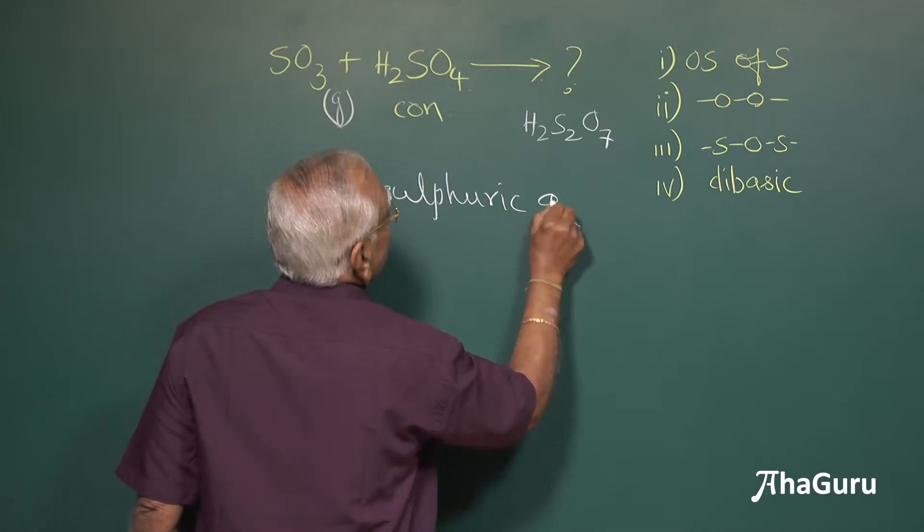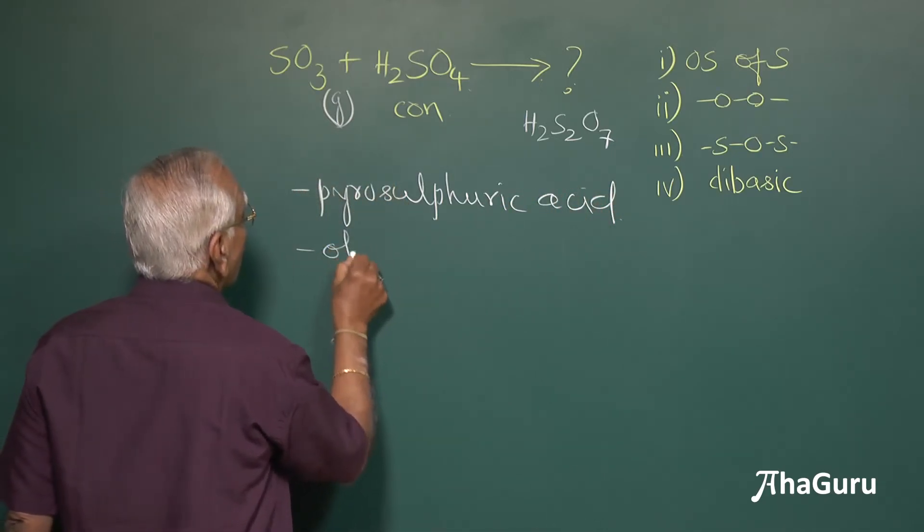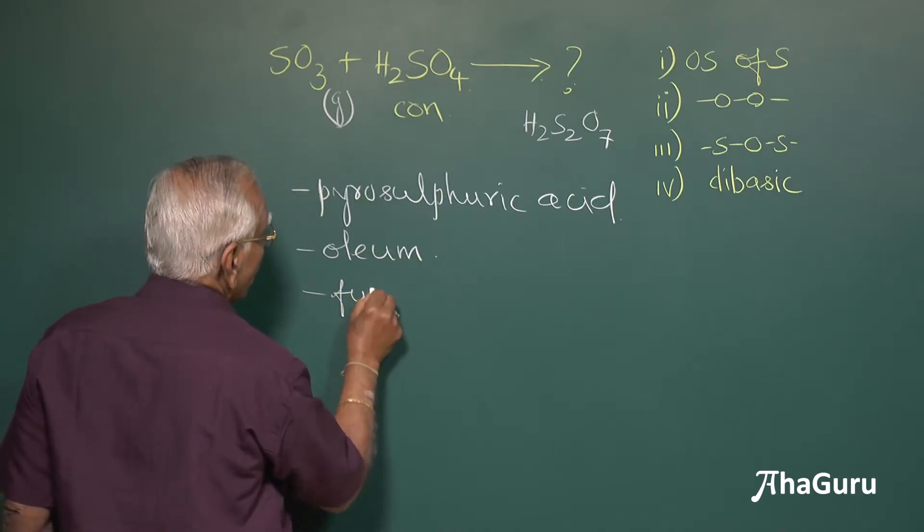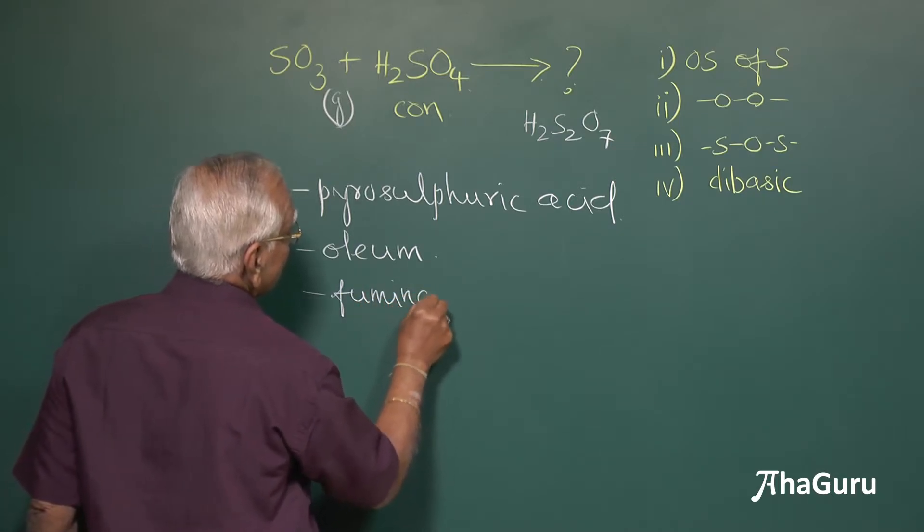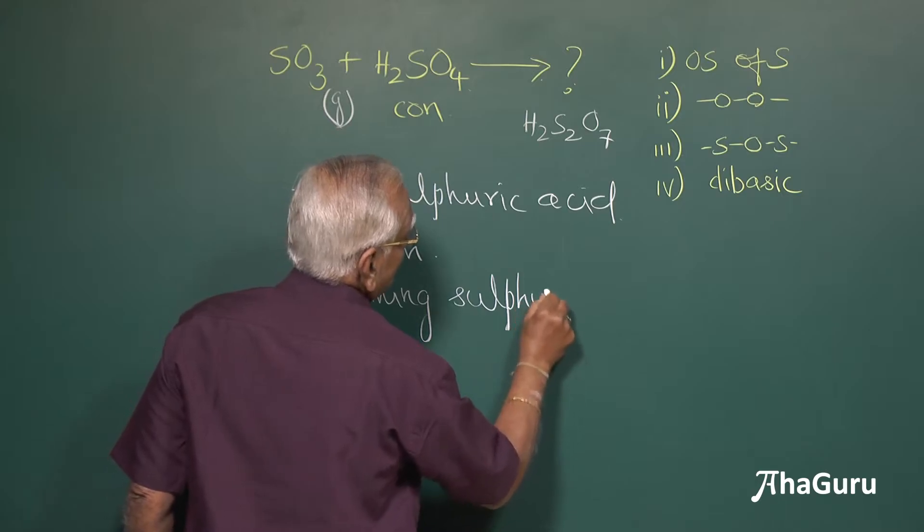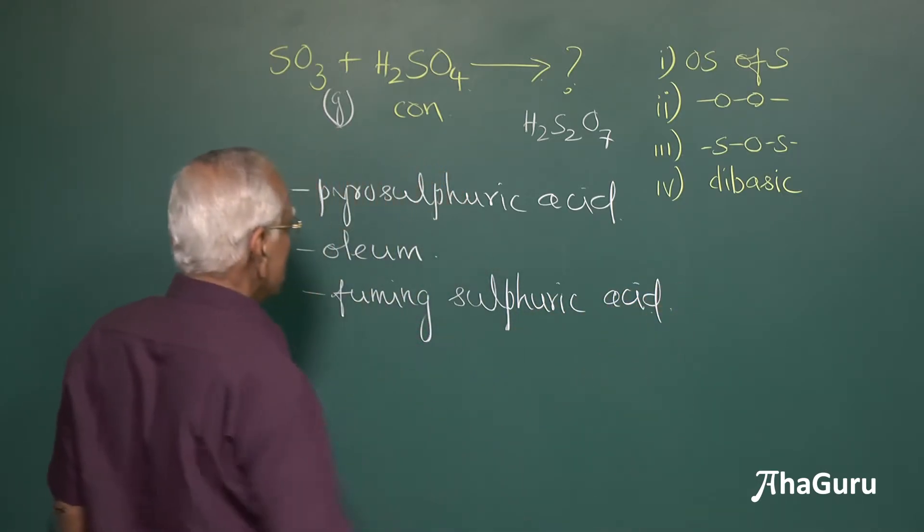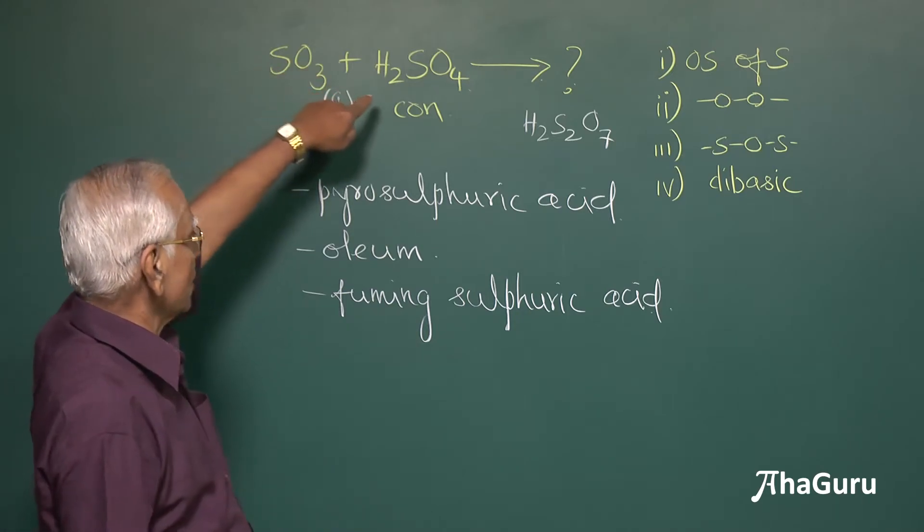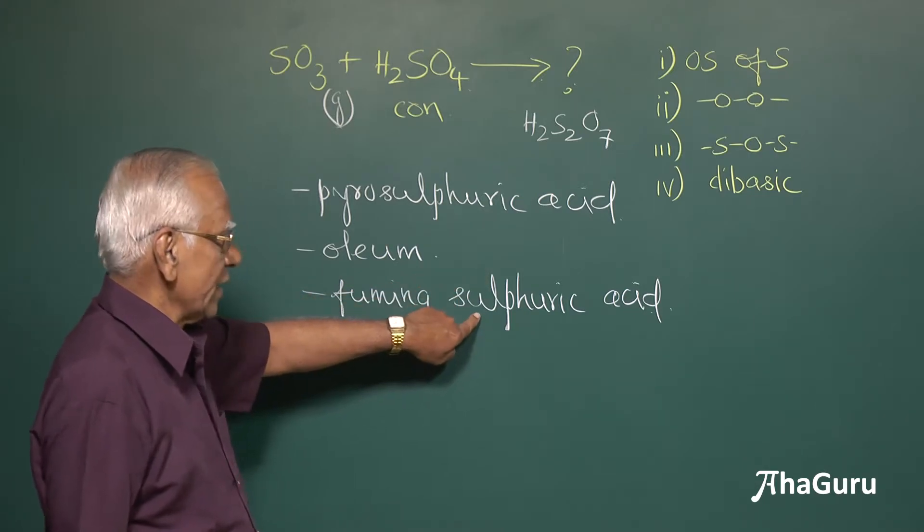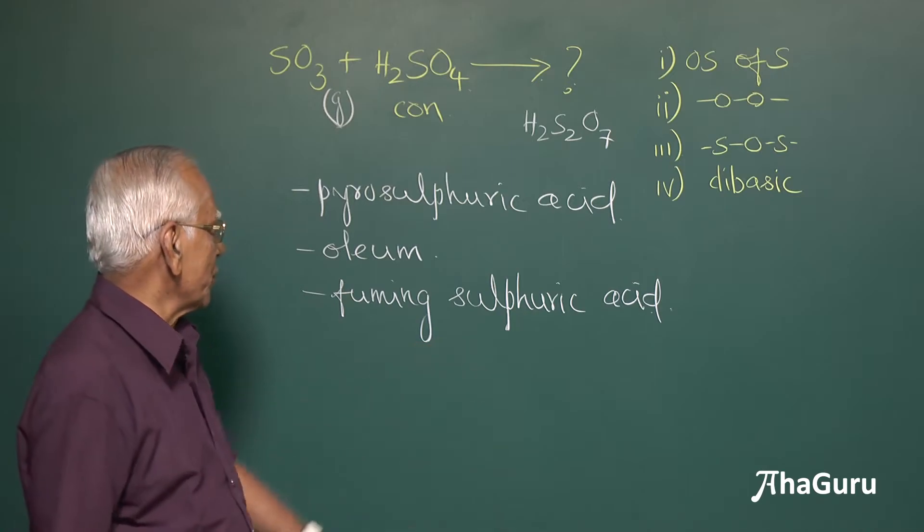This is one of the oxyacids of sulfur. It is also called oleum or it is also known as fuming sulfuric acid. It is much powerful, more concentrated than concentrated sulfuric acid. Maybe this is used as a sulfonating agent towards aromatic electrophilic substitution reaction.